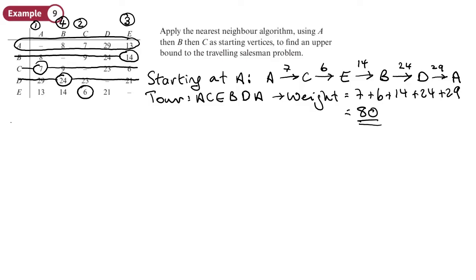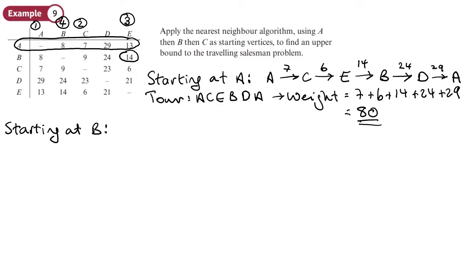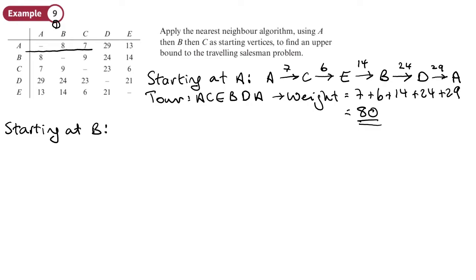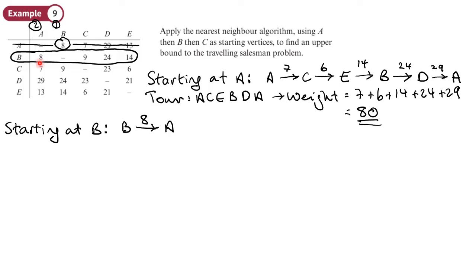Now we're going to repeat the whole thing again, but this time starting at B. I'll put a ring around row B to remind me that I'm going to need it at the end, but not use those values yet. The lowest weight in column B is 8, so I go from B to A with a weight of 8. Now I cross out A and look at column A. The lowest weight in column A is 7, so that's step three — weight 7 to get to C.